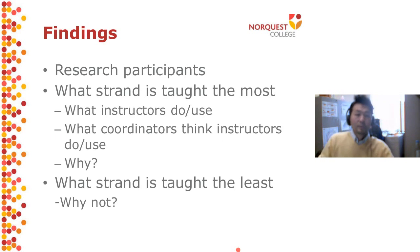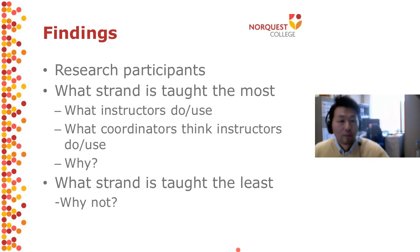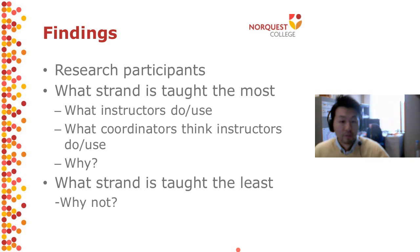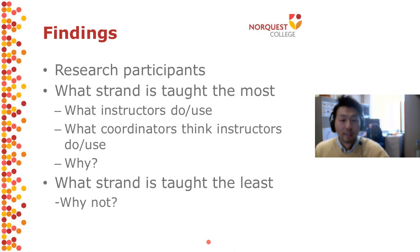I'm going to talk about findings in this order: first, research participants; then, of the seven strands, which strand is taught the most and which the least; for each strand, what do teachers do or use; and what instructors think their teachers do or use and why. Lastly, for the strand taught the least, we'll look at the reasons.